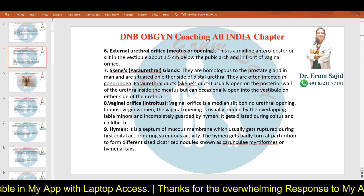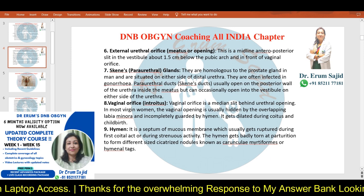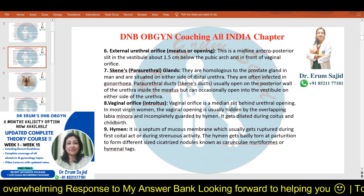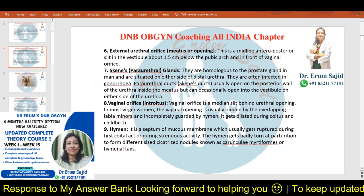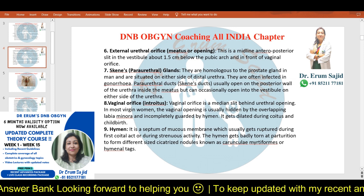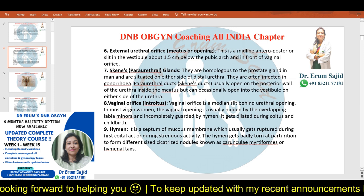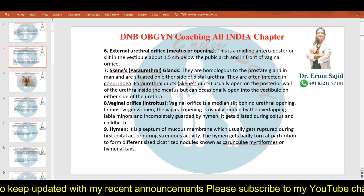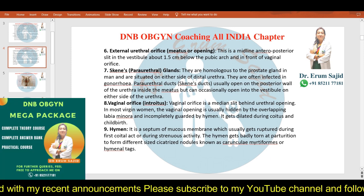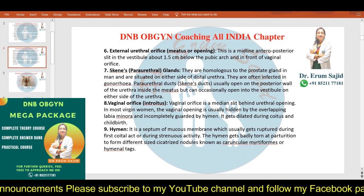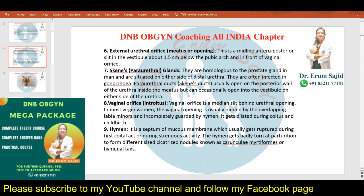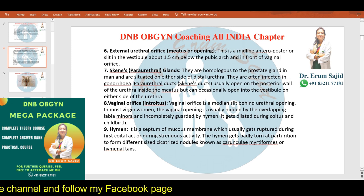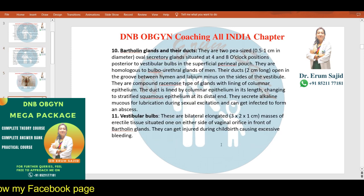The vaginal orifice is a median slit behind the urethral opening. In most virgin women it is usually hidden by the overlapping labia minora and is completely or incompletely guarded by the hymen. It dilates posteriorly during coitus and childbirth. The hymen is a septum of mucous membrane which usually ruptures during the first coital act or during any strenuous activity. At parturition it gets badly torn to form small scarred nodules called carunculae myrtiformes, also known as hymenal tags. Hymenoplasty is an emerging area of cosmetic gynecology, so understanding the hymen's origin and importance is clinically relevant.